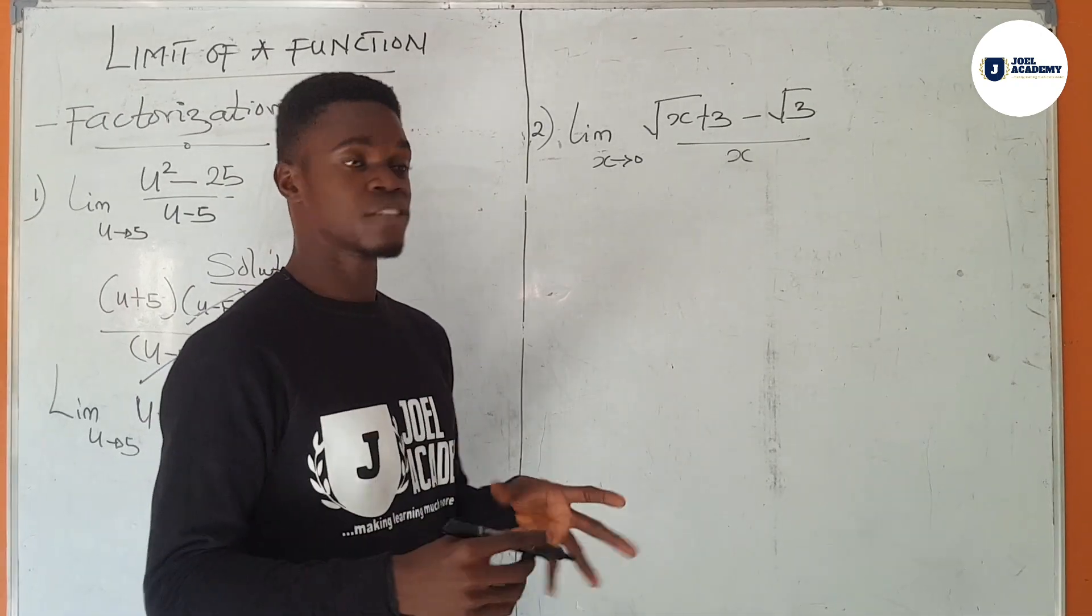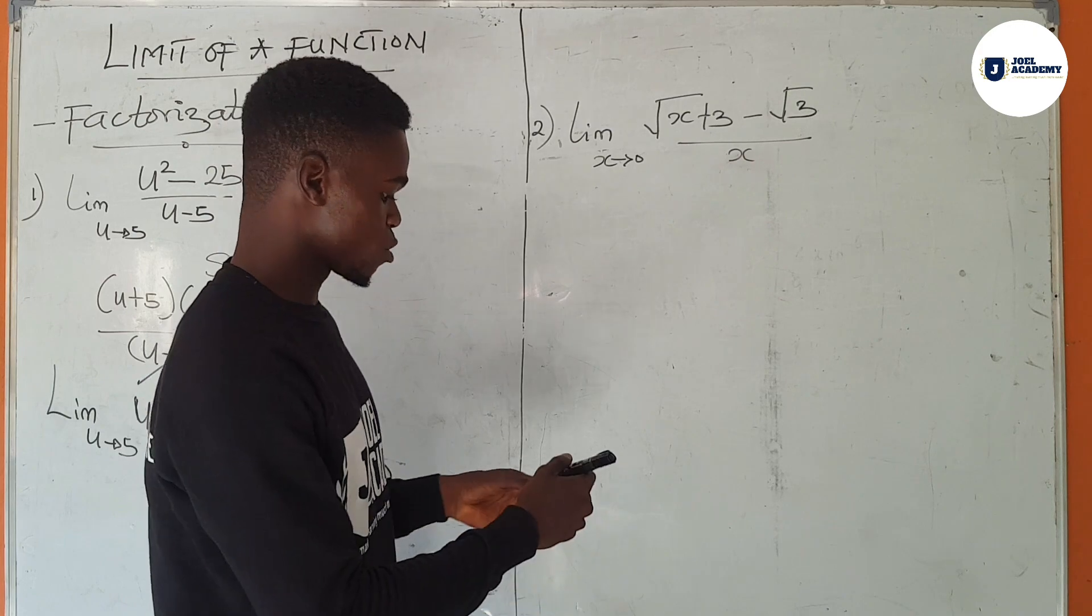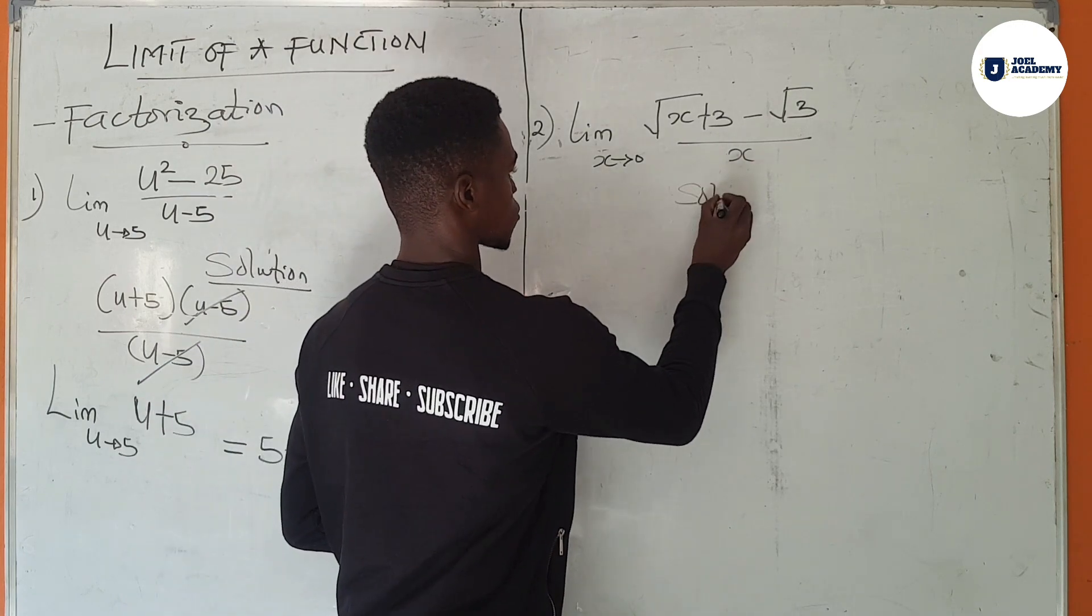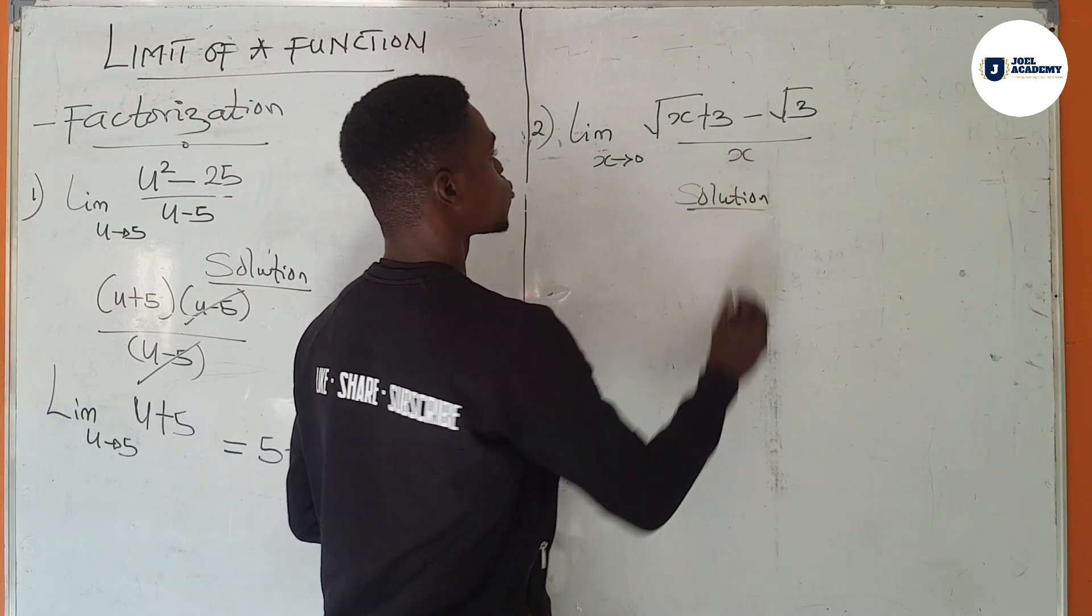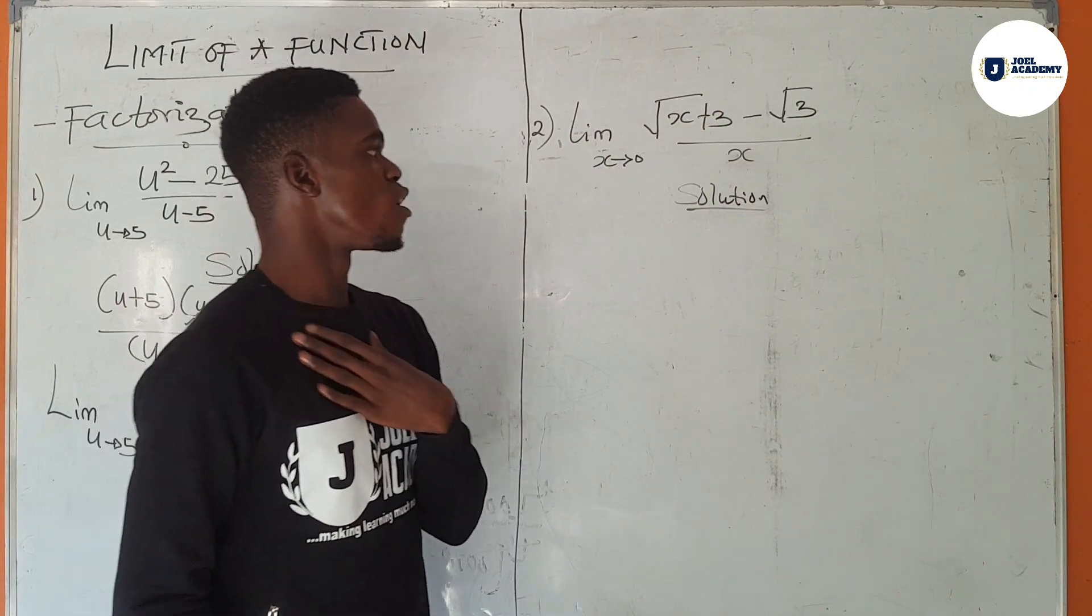So then, direct substitution doesn't work. We'll try out factorization. To factorize this, what do we do? First of all, we perform an action that is called rationalization.